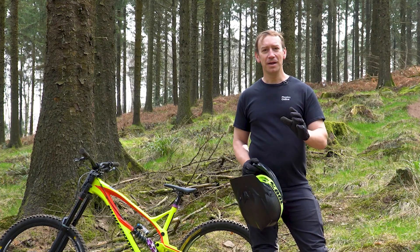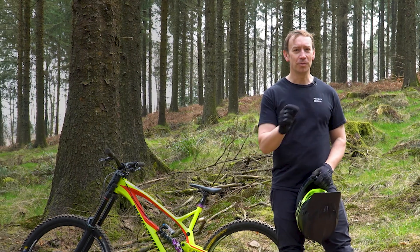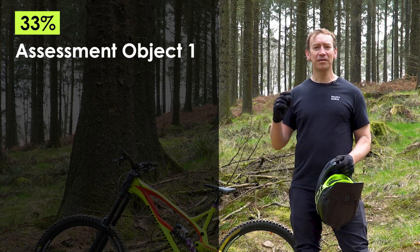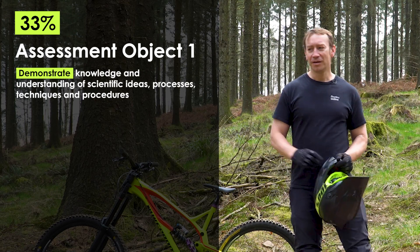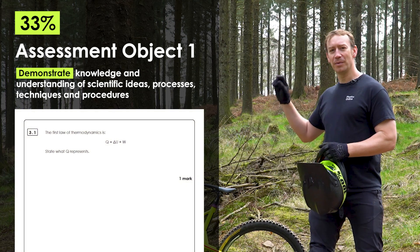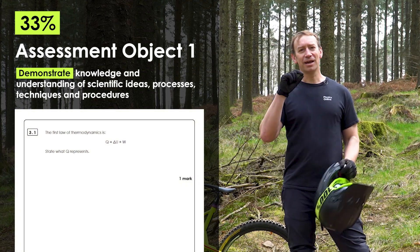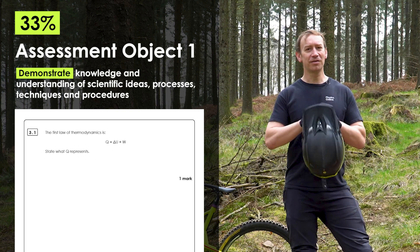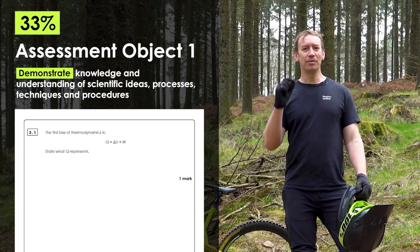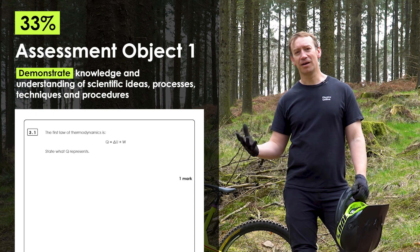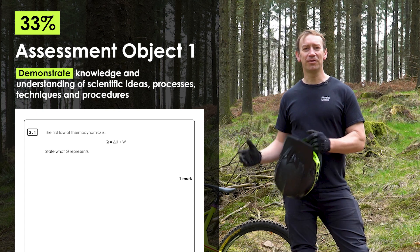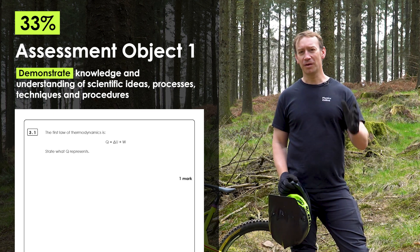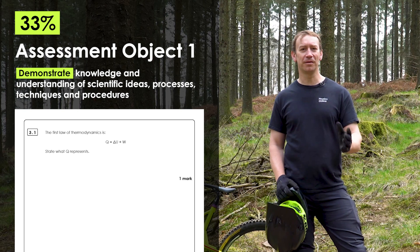In A-Level Physics there are three different assessment objectives. The first one, AO1, is worth about 33% of all of your marks in the exams, and this is about demonstrating your knowledge of physics. So the first part of this question was looking at identifying what Q represents in an equation. That is just a fact you have to know — the kind of thing you learn from flashcards and lists of definitions. AO1 questions are often relatively straightforward to prepare for because it's just learning facts about the physics course.